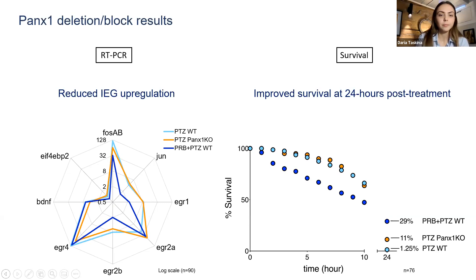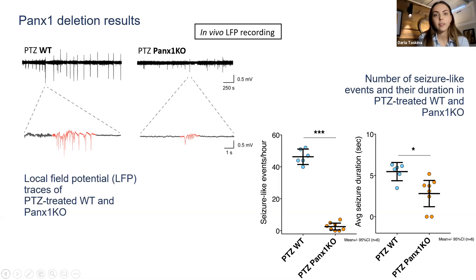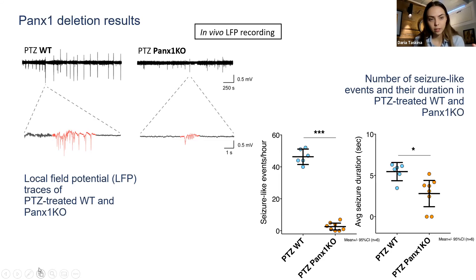These final results were done by PhD student Paige, who performed in vivo local field potential recordings in the brain's optic tectum of the zebrafish. On the left is a trace of the wild type, with the red showing typical seizure activity. On the right is the Pannexin-1 knockout and their typical LFP trace. Ictal seizure events are reduced for the Pannexin-1 knockout, as well as their duration.